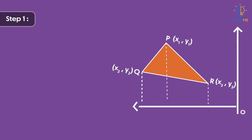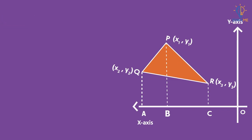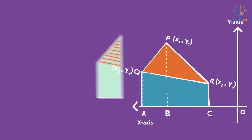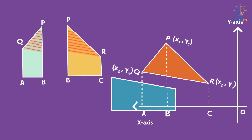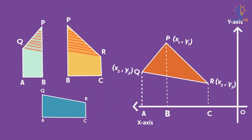Step 1: Draw the perpendiculars from vertices P, Q, and R to the x-axis at points A, B, and C respectively. Step 2: Now, if we look at the figure carefully, three different trapeziums are formed: PQAB, PBCR, and QACR in the coordinate plane.